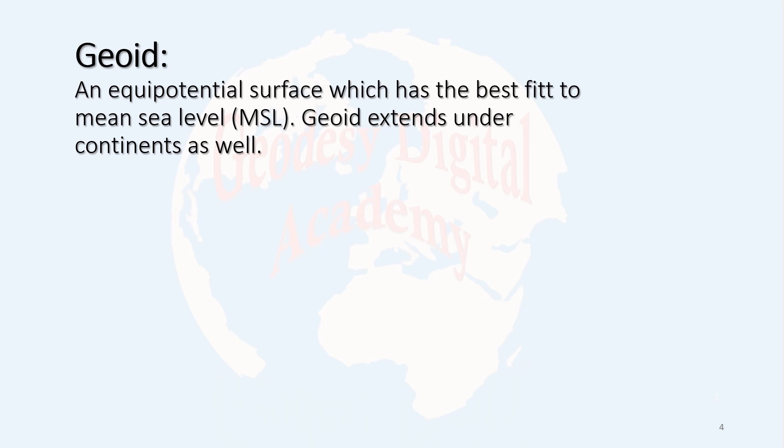Another shape of the Earth is the geoid, or the physical shape of the Earth. It's an equipotential surface which has the best fit to mean sea level. It extends under the continents as well. To explain the concept of geoid, let us begin with the definition of equipotential surface.